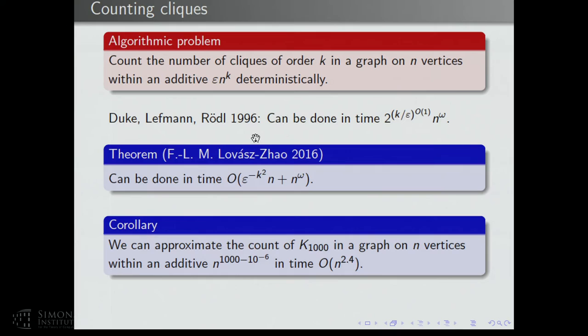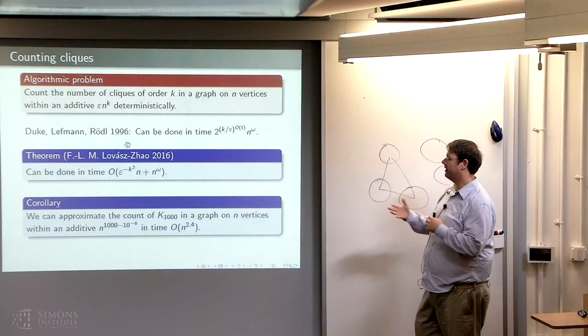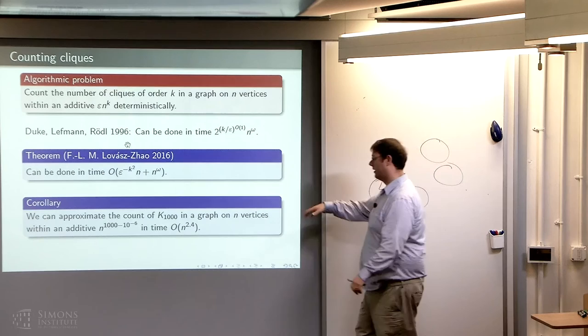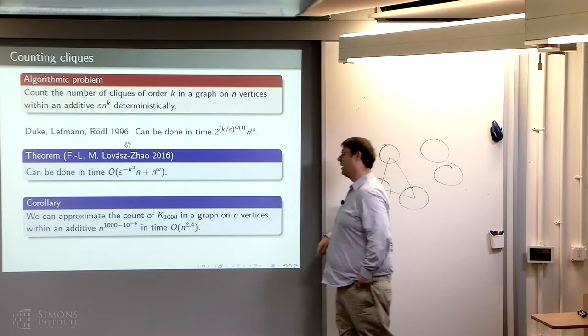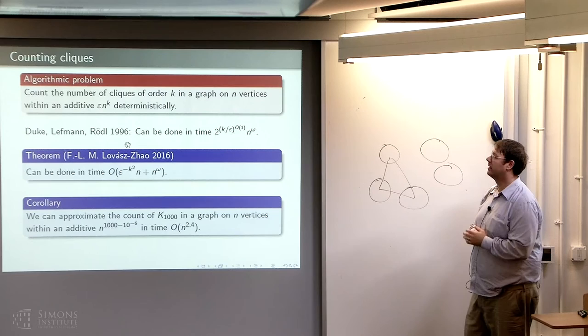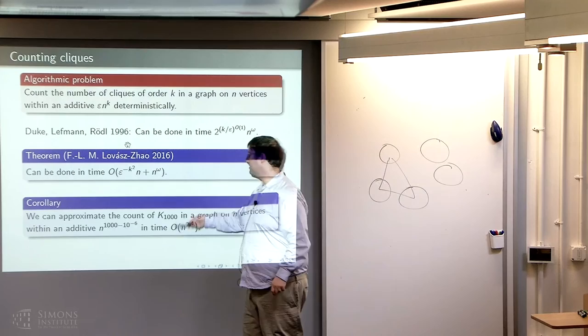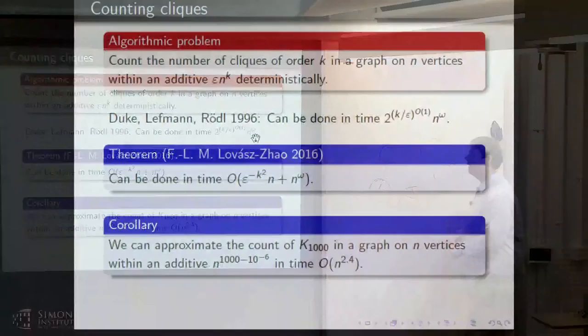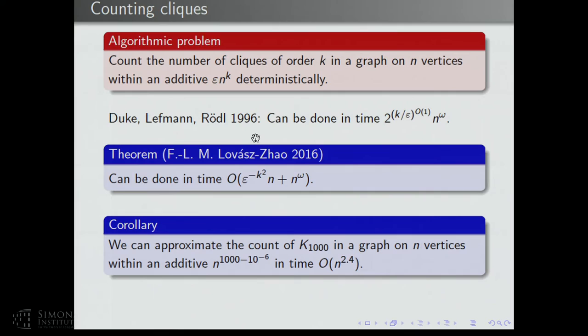As a corollary, suppose you want to count cliques of size 1,000 in a graph. The natural approach takes n-to-the-1000 time to count exactly. To approximate the count — normally on the order of n-to-the-1000 cliques in a dense graph — for every graph on n vertices you can count the number of 1000-cliques up to an additive n-to-the-(1000 minus 10-to-the-minus-6) in time n-to-the-2.4. This gives fast algorithms to approximate counts with a polynomial-type improvement.